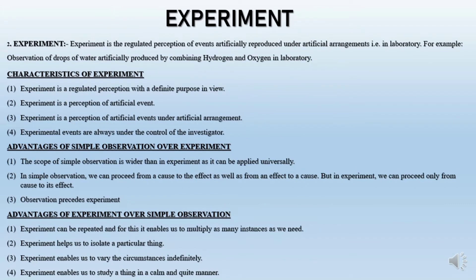What is experiment? Experiment is the regulated perception of events artificially reproduced under artificial arrangement, that is, in a laboratory. For example, observation of drops of water artificially produced by combining hydrogen and oxygen in a laboratory is a kind of experiment.